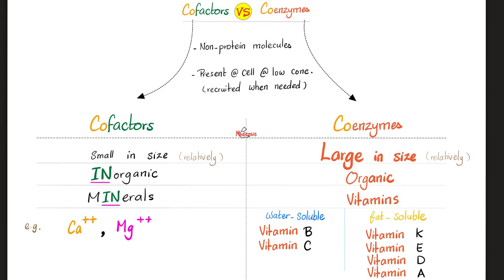Can you give me examples of each? Sure. Cofactors, we're talking minerals. Calcium and magnesium, among others. If you want to add more, there is iron, there is copper, there is zinc, etc. Basically, the stuff in the periodic table, if you remember.